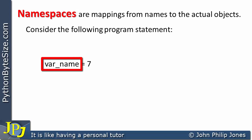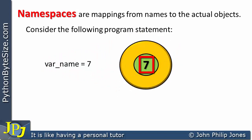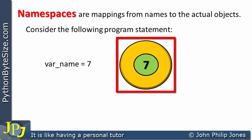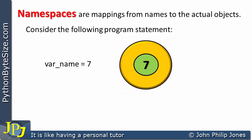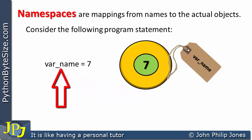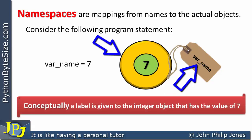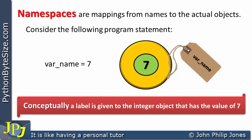You can see I'm saying var_name is assigned 7. What this will do is create an instance of the integer class, and that instance will have the value of 7, as shown by the schematic animation. This object, which is an instance of the integer class, will be known within the program by var_name, which we can regard as a label. So conceptually, a label is given to the integer object that has the value of 7. Everything in Python is an object.